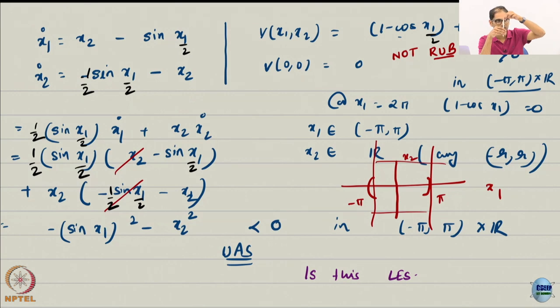So if I modified this pendulum equation in this way, then this inverted position is not an equilibrium at all. It is only this position in this position in this position. Is that clear? Just by making x1 to be x1 by 2. I am going to erase this.